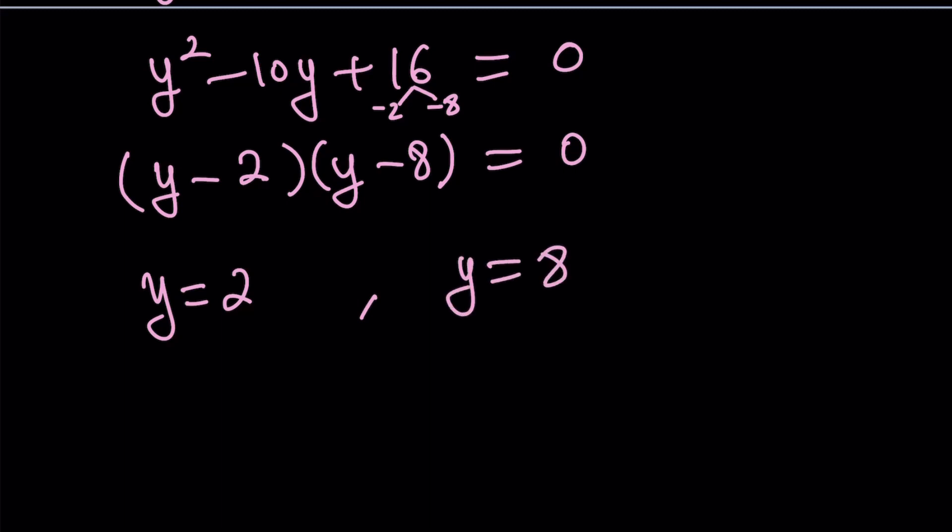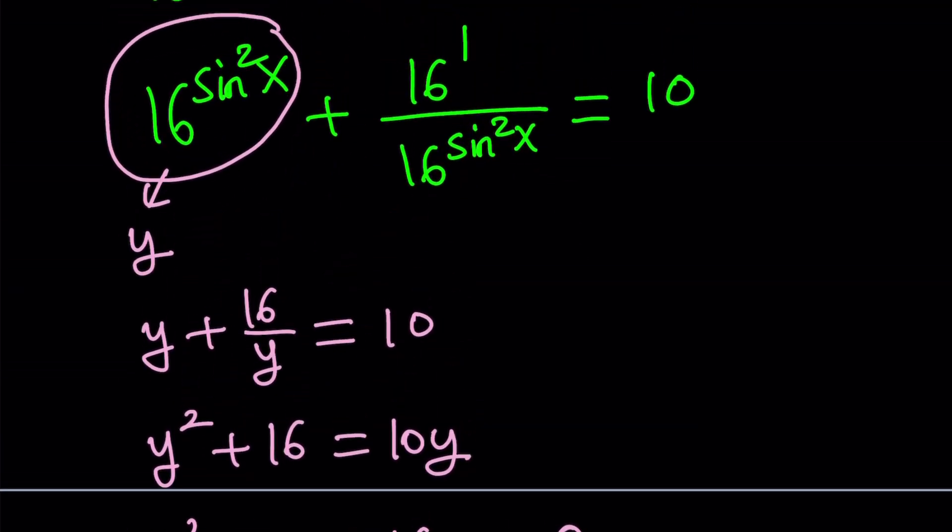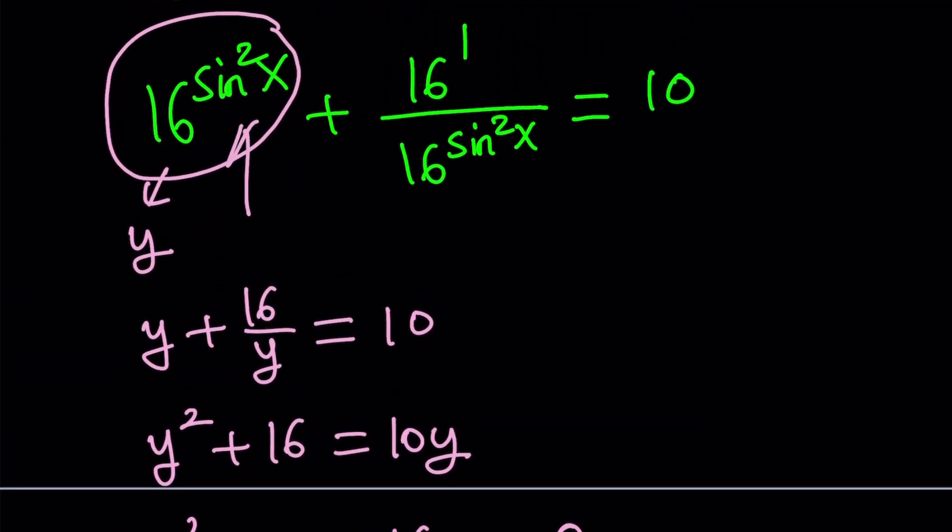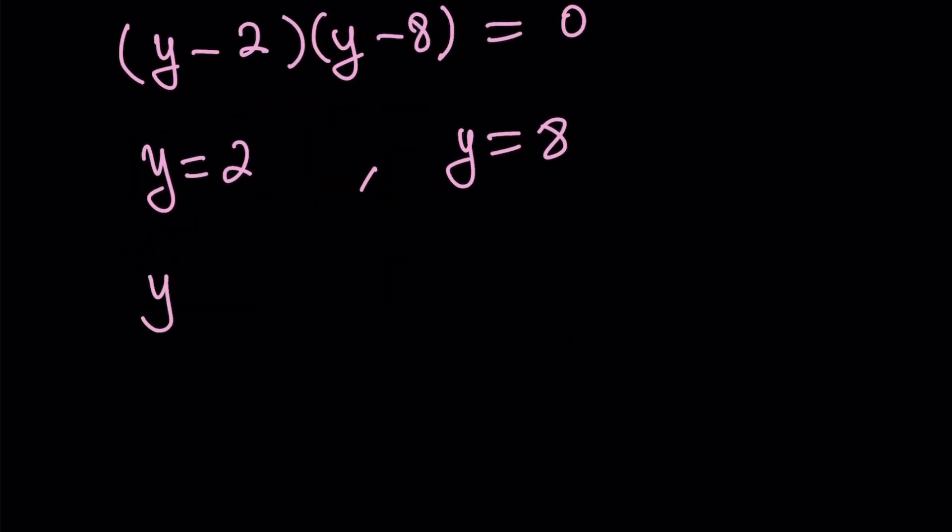But we're not looking for y because we're looking for x. But y is equal to 16 to the power sine squared x. Let's rewrite it. And now I'm going to set this equal to 2 and 8 separately and solve each equation. At the end I'm going to show you a graph.